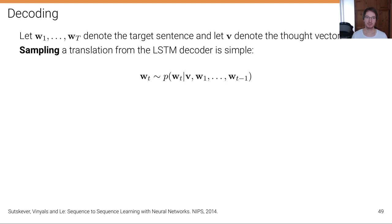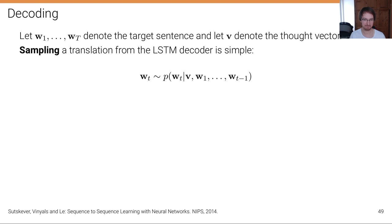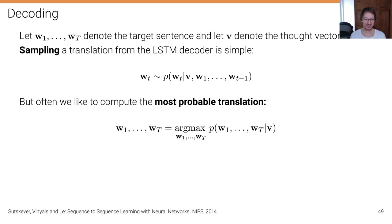Let's talk about decoding. Let w1 to wT denote the target sentence and let v denote the thought vector. Sampling a translation from the LSTM decoder is simple due to its autoregressive nature — we just sample a new word from the distribution predicted by the LSTM given the thought vector and the previous words. But this is not what we want in translation. We want to compute the most probable translation — to find w1 to wT that maximizes p(w1...wT | v).